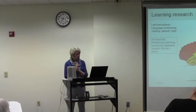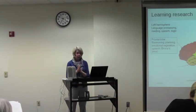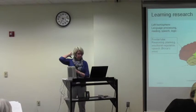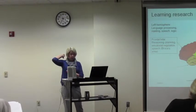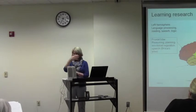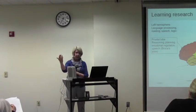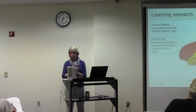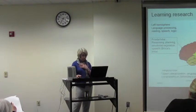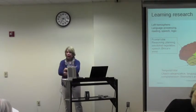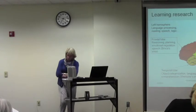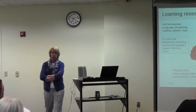The occipital lobe, which is right at the back, is actually where our visual cortex is, and that's where we recognize stimuli — things we see — and also where letter recognition takes place. And finally, the temporal lobe, which is sort of on the side, is where we categorize and where language comprehension occurs.